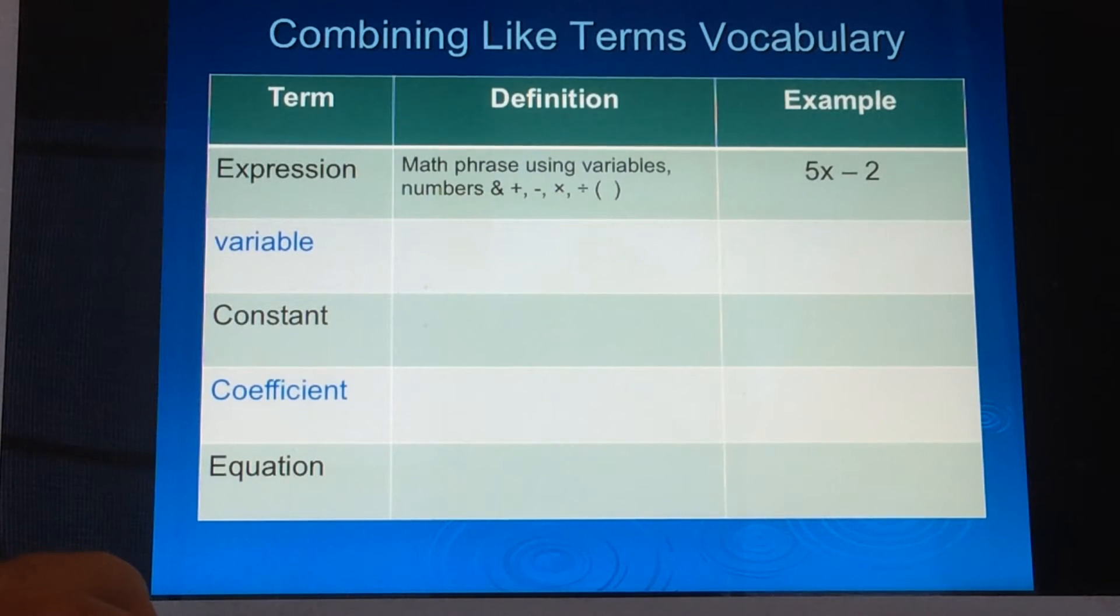The next term is variable. A variable is a letter used to represent an unknown number or quantity. In the example 5x minus 2, the x is the variable, and that is shown by the black typeface.